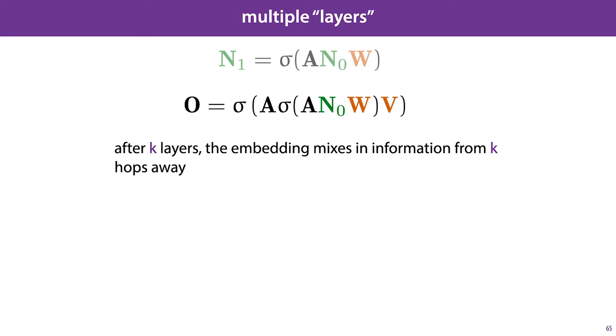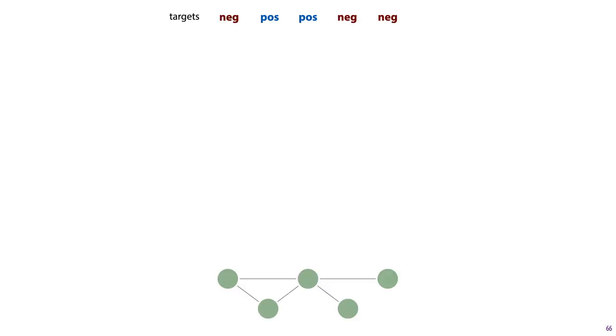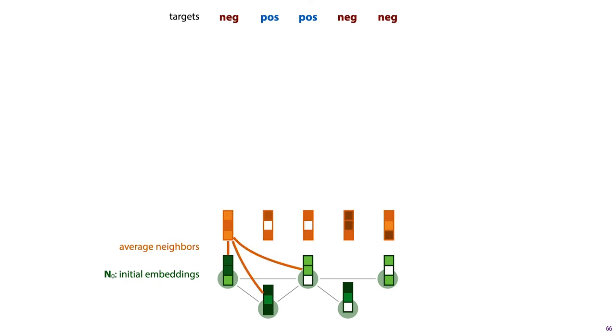This is probably a bit abstract, so let's go through it step by step. We are given a graph structure, shown at the bottom, and for some or all of the nodes, we are given target labels. In this case, positive and negative classes. We start by assigning each node an initial embedding vector. We then perform a mixing step, where we average together the embedding vectors of all the neighboring nodes, which gives us for each node a new embedding vector that is a mixture of itself and its neighbors.